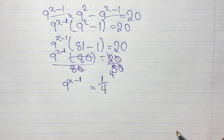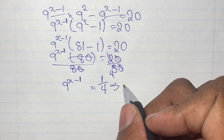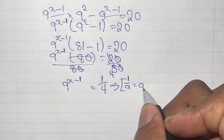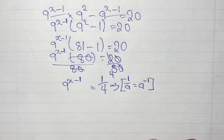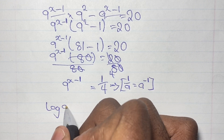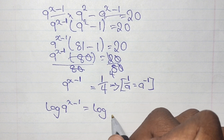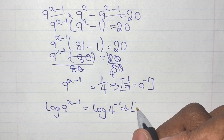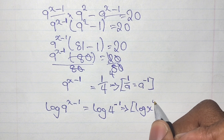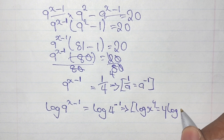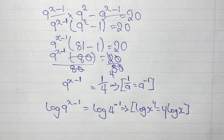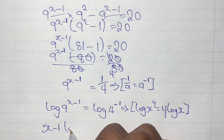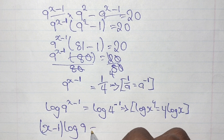Now if we look at a quarter, we can use our index law where 1 over a is the same as a to the power of negative 1. From here onwards we'll be using logarithms to solve for the value of x. Our equation can be written as log 9 to the power of x minus 1 is equal to log 4 to the power of negative 1. Using the logarithm rule log x to the power of y equals y log x, we take the index x minus 1 and write x minus 1 times log 9 equals negative 1 times log 4.